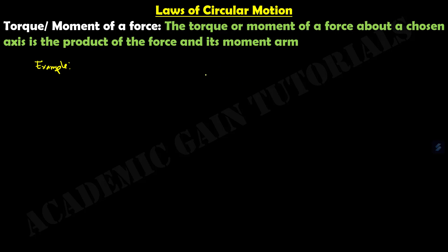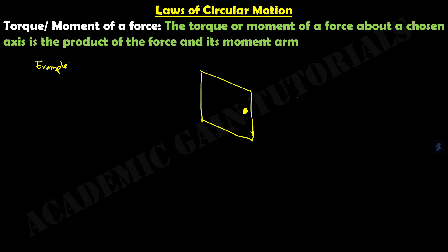Take an example of a door. Suppose this is a door with a handle. We make three points: point A, point B, and point C. This is the part connected to the wall — the static part of the door.